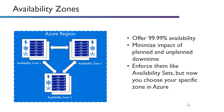Essentially, they work similar to availability sets, but now we get 99.99% availability. They minimize the impact of planned and unplanned downtime and really just enforce them like availability sets, but now you choose your specific zone in Azure. In availability sets, we had those fault domains and update domains. With availability zones, we essentially just choose the zone.